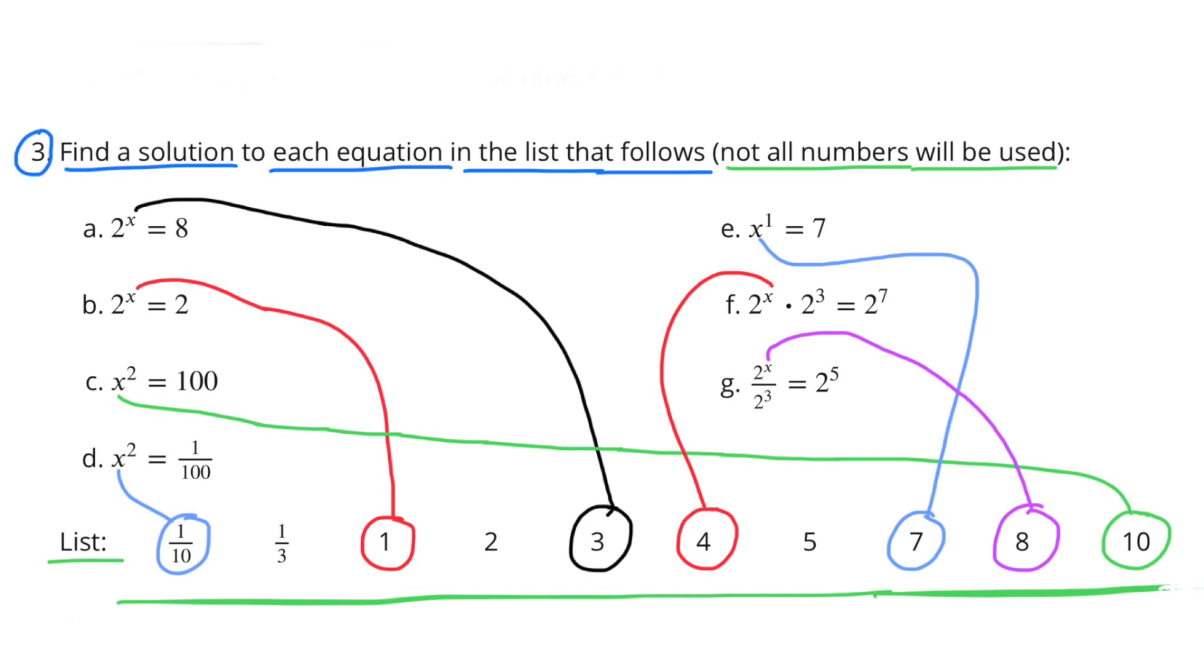Part B. 2 to the power of X equals 2. Substitute the 1 for the X. 2 to the power of 1 equals 2. Part C. X to the power of 2 equals 100. Substitute the X with 10. 10 to the power of 2, or 10 times 10, equals 100.